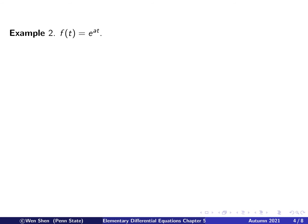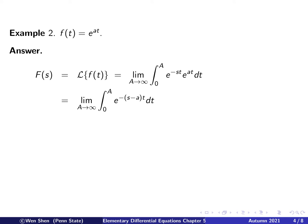Our next example is the exponential function: f of t is e to the at, where a is just a parameter, positive or negative. Let's compute the corresponding Laplace transform by definition. The kernel is e to the negative st, and the function f(t) we put in is e to the at. We see that these are two exponential functions, so we can combine the powers to get e to the negative (s minus a) times t.